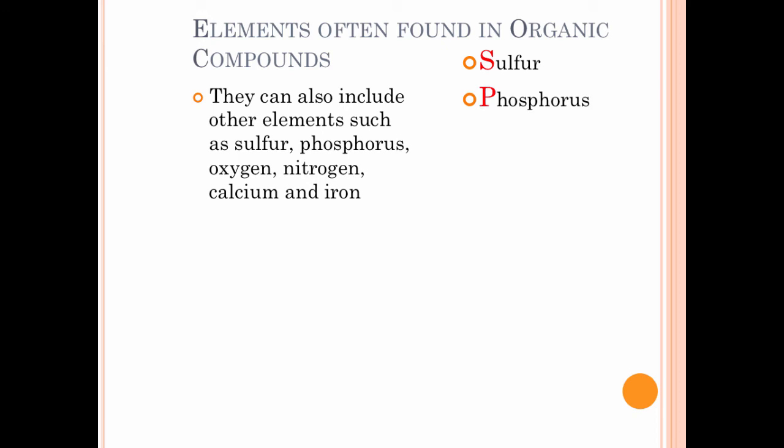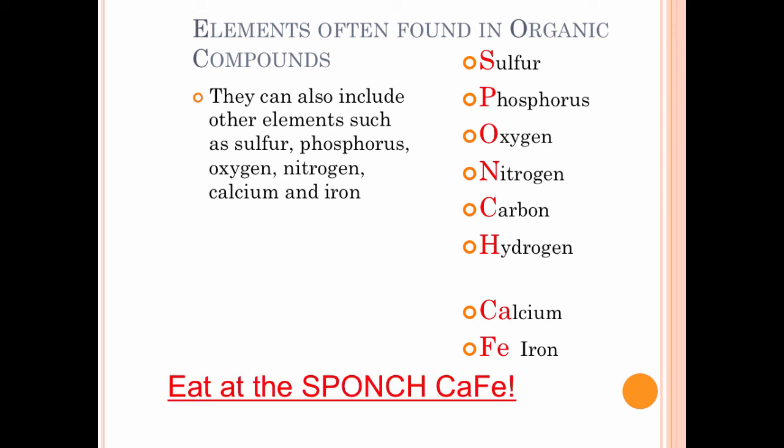But let's add a little bit to it. Sulfur, phosphorus, oxygen, nitrogen, carbon, hydrogen, calcium, and iron. If you would read the red letters as it goes down, it spells SPONCH CAFE. I want you to write that down. You always want to eat at the SPONCH CAFE. These are all organic elements. However, what's the most important part? When you write SPONCH CAFE, I want you to put a box around the C and the H. That is truly what determines if a molecule is organic.